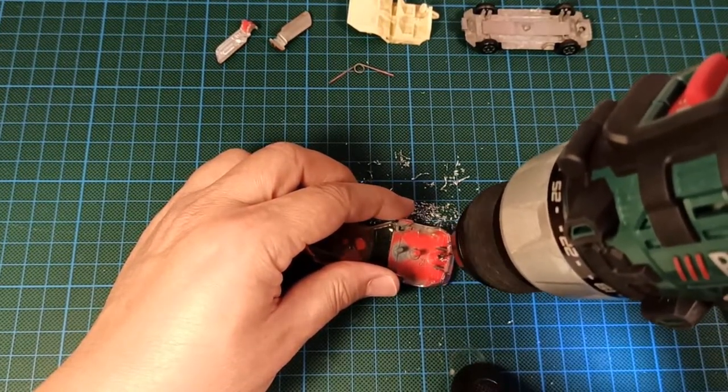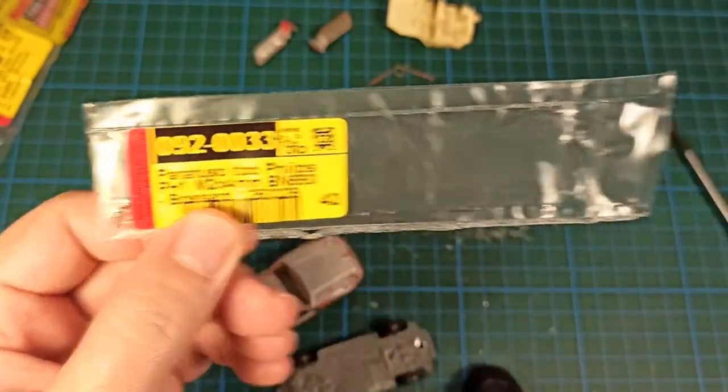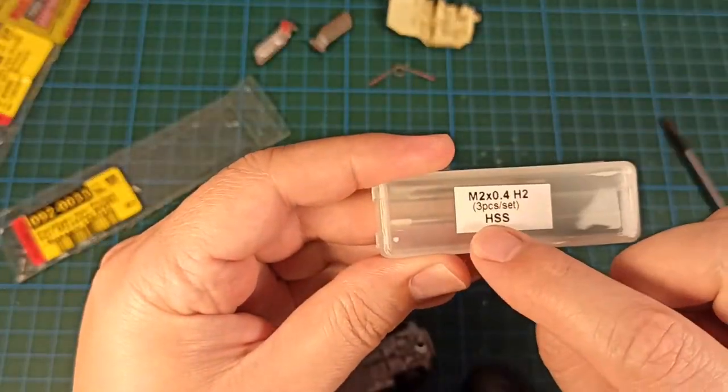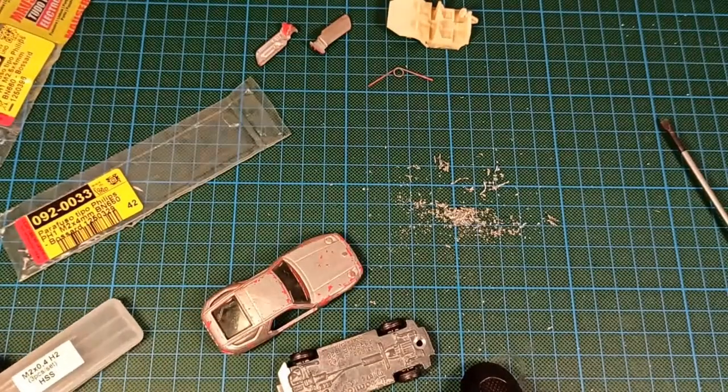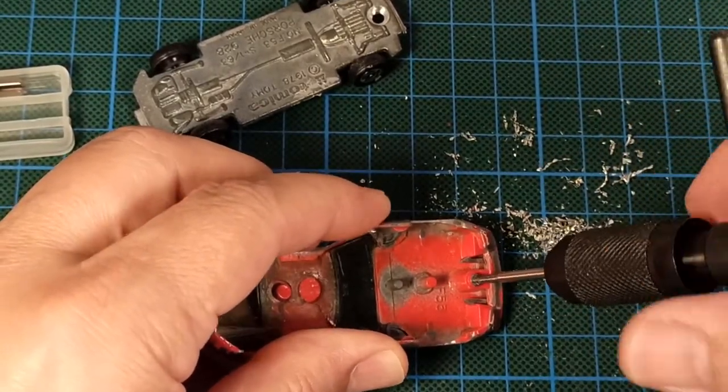Okay I'm drilling the hole for the screw. I'm using the drill bit, it's 1.5 millimeters for the M2 screw. Here is the tapping tool to open the threads. I use water to lubricate the piece.